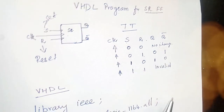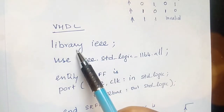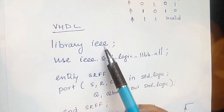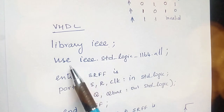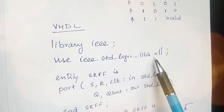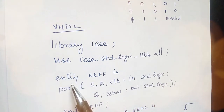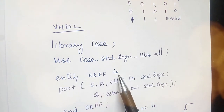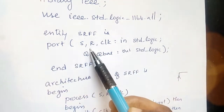Now we are going to write the program. First we have to declare the library: 'library IEEE', and then to use all the inbuilt functions we write 'use IEEE.std_logic_1164.all'. After this we have to declare the entity, so we write 'entity' followed by the name of the entity.